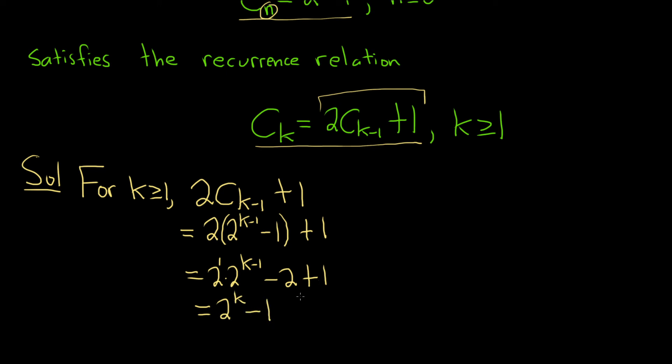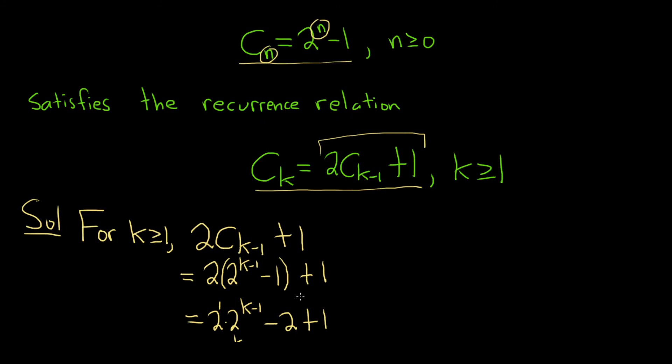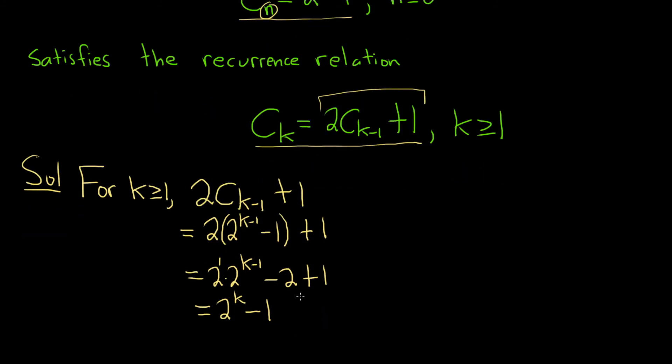And this is actually our sequence. If you look back up here, it's 2 to the n minus 1. So this is actually just c sub k, which is 2 to the k minus 1.